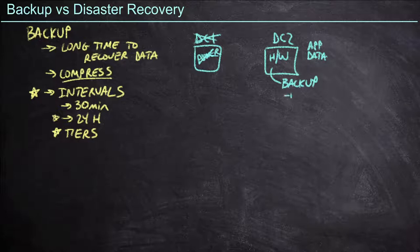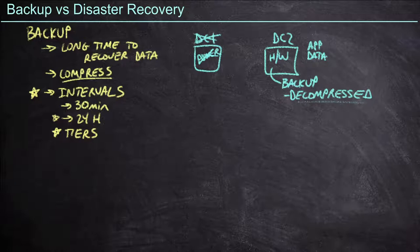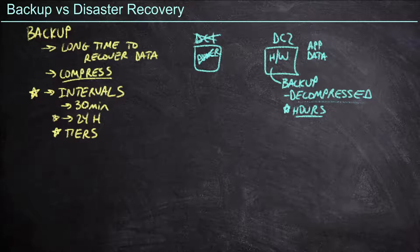At this point, we're going to have to start to decompress that data. Remember, we compressed the data and it's not usable in a compressed state, so we've got to decompress it to get everything ready to go. Realistically, this might take up to several hours to decompress. We can prioritize certain tiers of applications over others, but it's going to take at least some amount of time that we need to factor into our DR strategy.